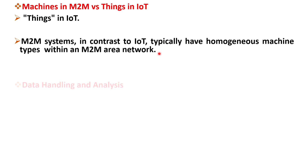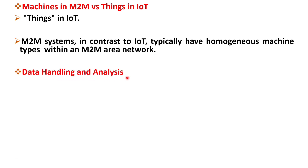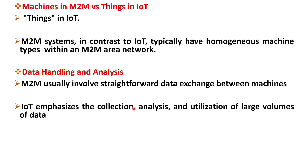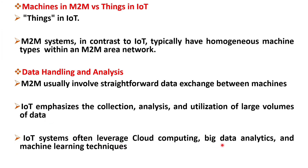Let's delve into the next key difference, which is data handling and analysis. M2M systems usually involve straightforward data exchange between machines with a very limited need for advanced data processing and analytics. IoT, however, emphasizes the collection, analysis, and utilization of large volumes of data generated by interconnected devices. IoT systems often leverage cloud computing, big data analytics, and machine learning techniques to extract valuable insights and enable intelligent decision making.